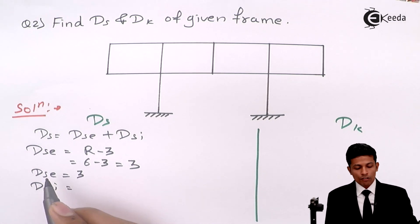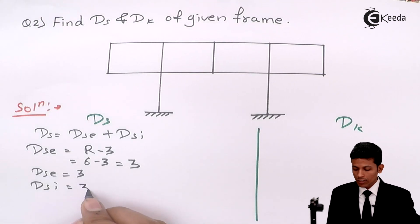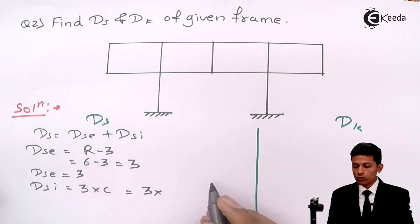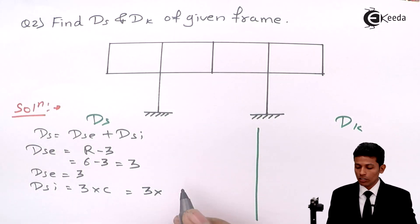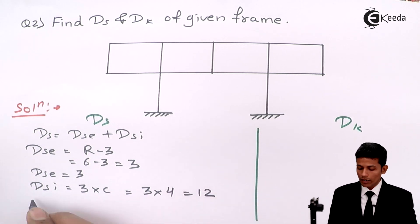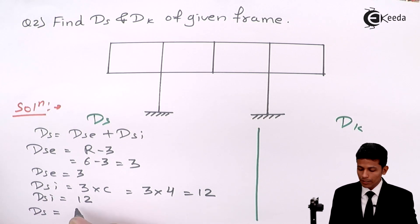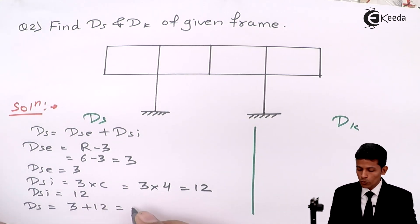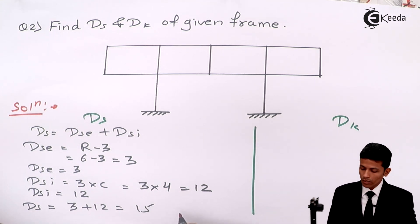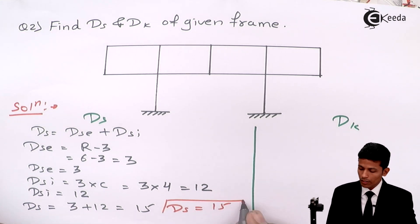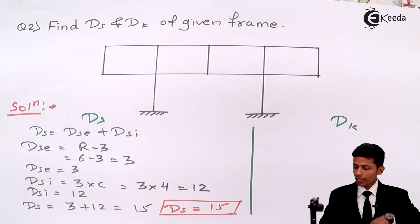For DSi in frames: DSi = 3 × c. Counting closed loops: 1, 2, 3, 4 — so c = 4, and DSi = 3 × 4 = 12. Therefore DS = DSe + DSi = 3 + 12 = 15. The degree of static indeterminacy is fifteen.